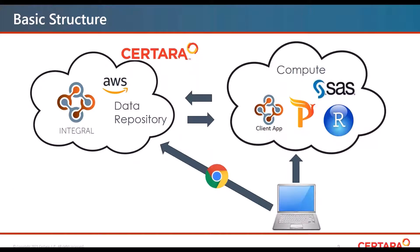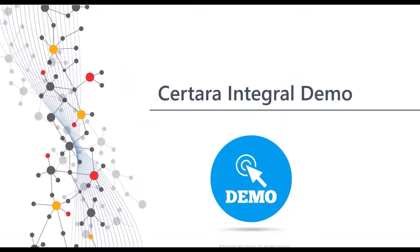This slide represents a diagram of how Integral works. Starting at the bottom right, this is the user's workstation. The user connects as they normally do in their computing environment — it can be Phoenix, Pirana, SAS, Python, or another analytical tool. The user installs the Integral client application to mediate transfer of information between the AWS cloud and their computing environment, allowing them to move and synchronize data back and forth. You can also connect directly to the Integral data repository through any web browser, such as Google Chrome or Firefox.